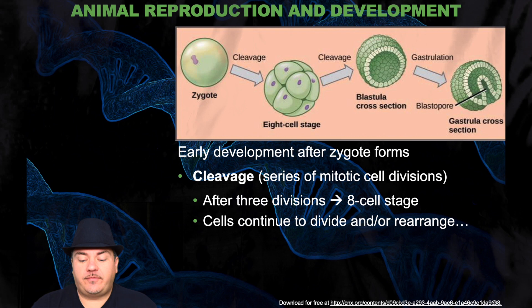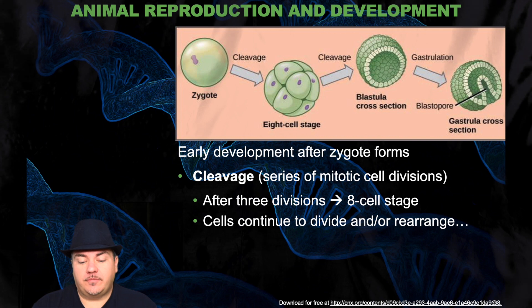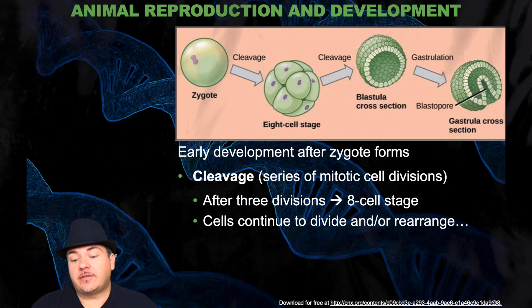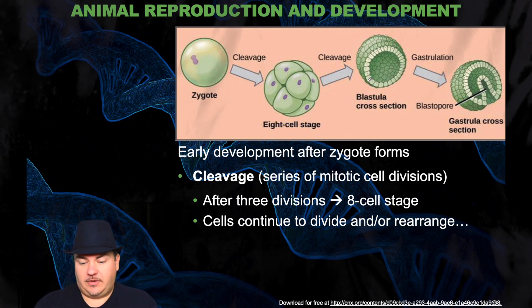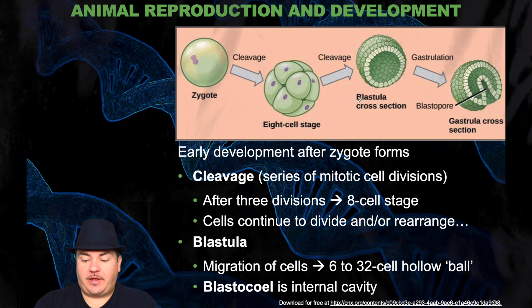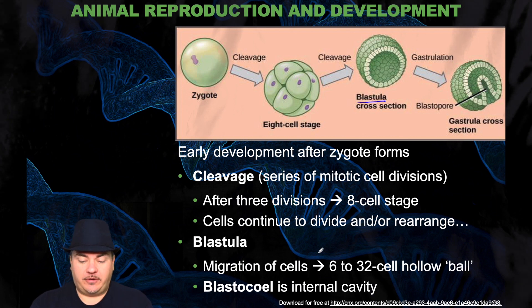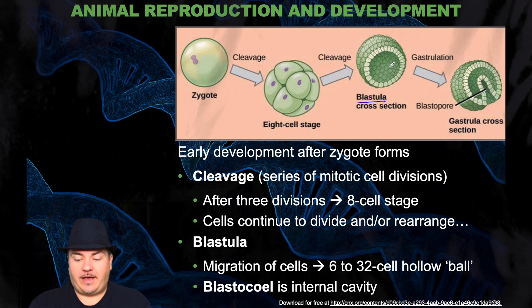During very early animal development, after the zygote forms — remember the zygote is a fusion of the egg and the sperm — you start cleavage, which is a series of mitotic cell divisions. So you go from one cell to two cells to four cells to eight cells, etc. Cells continue to divide and rearrange. In this example, we have the early eight-cell stage right here. It continues cleavage to form the blastula, which is a hollow ball of cells. The blastocoel is the internal cavity inside the blastula.